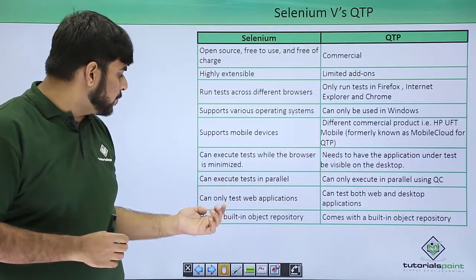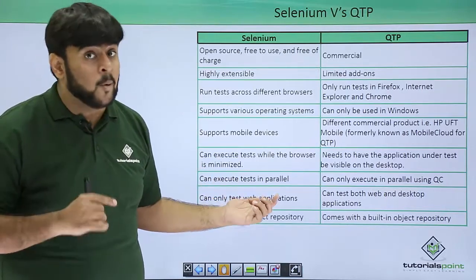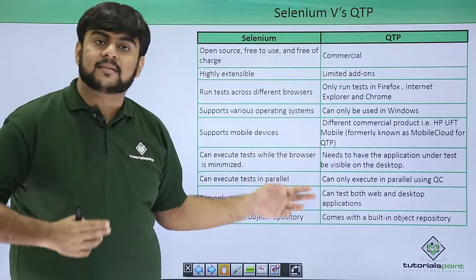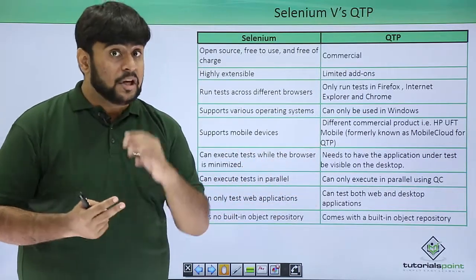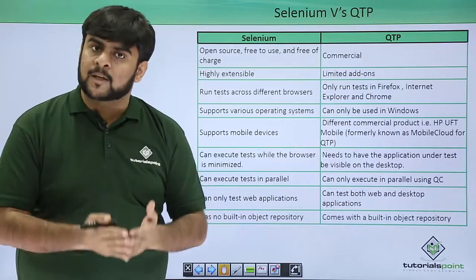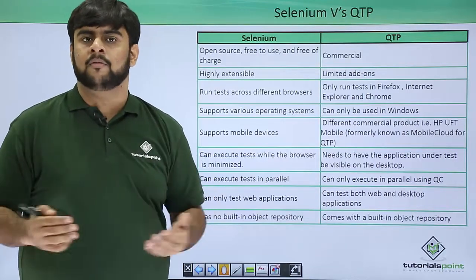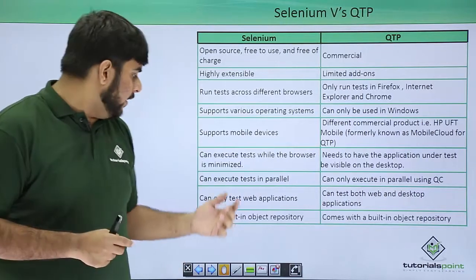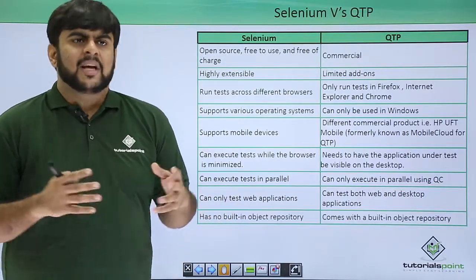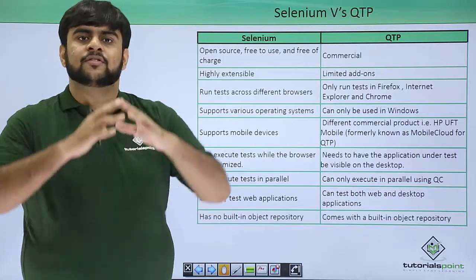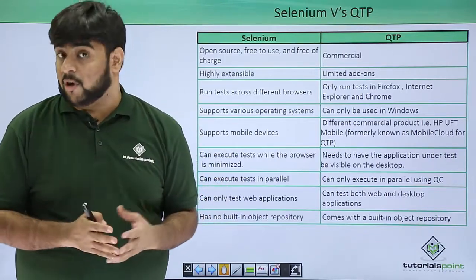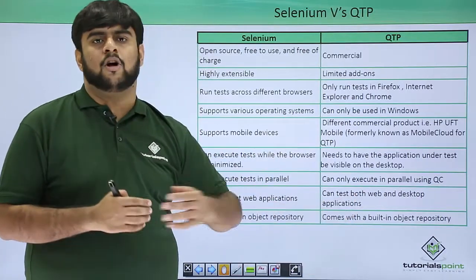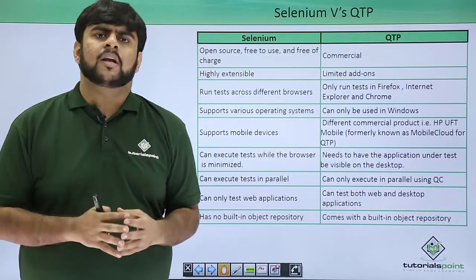Selenium can only be used to test mobile or web applications, but QTP can test both web and desktop applications. So if you are developing a desktop application and looking for an automation framework, you have to use QTP. Additionally, Selenium has no built-in object repository. Anything visible on a page is an object. Selenium has no object repository, whereas QTP comes with a built-in object repository.